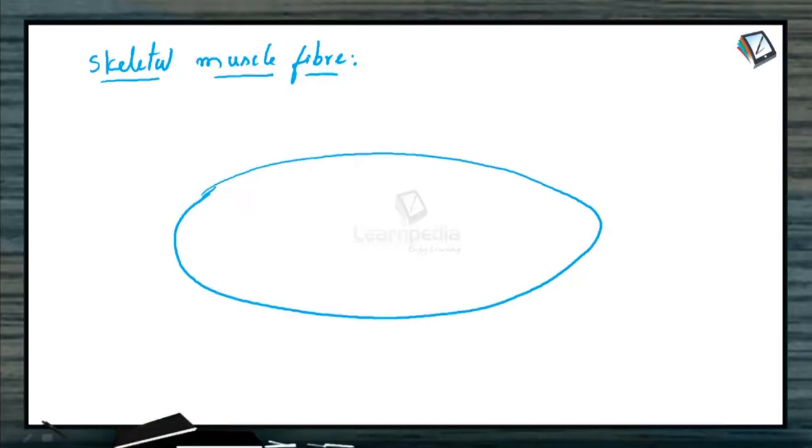Let us see the ultra-structure of a skeletal muscle fiber. Actually, each skeletal muscle fiber is cylindrical in shape. And its plasma membrane is called sarcolemma. Below this sarcolemma, there are large number of nuclei. This condition is called syncytial condition or multi-nucleate condition. And actually, each cell contains one prominent nucleus, but in a skeletal muscle cell or muscle fiber. Why is there a syncytial condition?